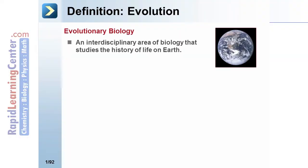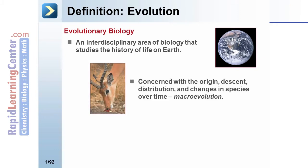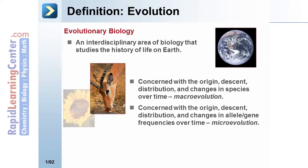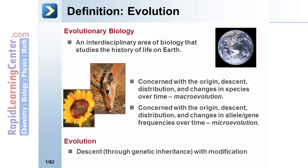Evolutionary biology is an interdisciplinary area of biology that studies the history of life on Earth. It's concerned with the origin, descent, distribution, and changes in species over time, known as macroevolution. The area concerned with the origin, descent, distribution, and changes in alleles and gene frequencies over time is called microevolution.